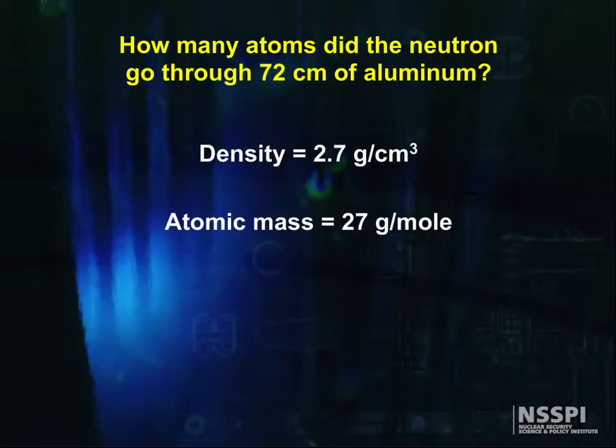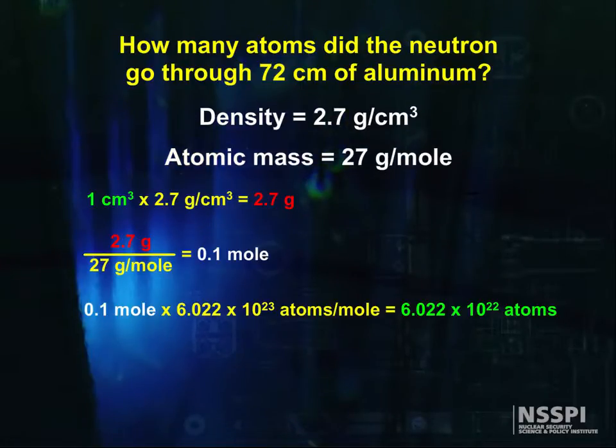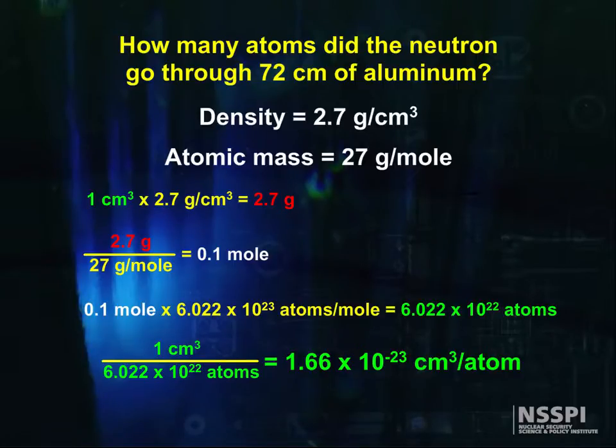Let's use aluminum because its atomic mass is 27 and its density is 2.7 grams per cubic centimeter, and that makes the math easy. How many atoms are there in a line along 72 centimeters? Well, let's see. One cubic centimeter weighs 2.7 grams, therefore it contains a tenth of a mole. This one cubic centimeter then contains 6.022 times 10 to the 22nd aluminum atoms. This means each aluminum atom occupies 1.66 times 10 to the minus 23rd cubic centimeters.